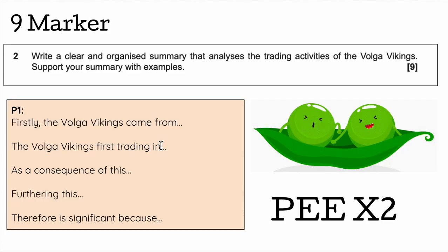Nine-markers will always start with the sentence starter: 'Write a clear and organised summary' — which is essentially a historical story. So in this case, it's 'write a clear and organised summary about the Volga Vikings.' You need to aim to write 2 PEE paragraphs — point, evidence, explain.